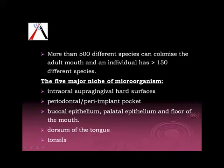One point to be noted is that the major change in the composition of microorganisms happens when the first tooth erupts in the oral cavity. With tooth eruption, we get the subgingival environment, which is very favorable for anaerobic organisms. So it is when the first tooth erupts that the main composition shifts towards anaerobic organisms. There are more than 500 different species that can colonize an adult mouth, and one single individual can have more than 115 different species.